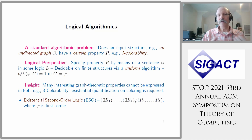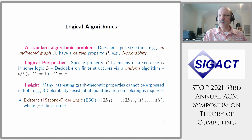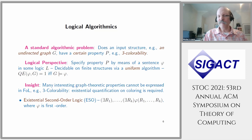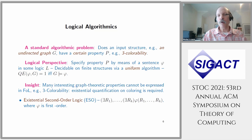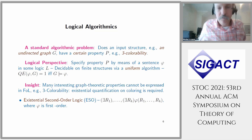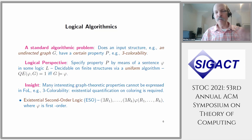First-order logic may be too weak for some problems. For example, three-colorability is not expressible in first-order logic, because we need to say 'there exists a coloring' — quantifying over a relation, which is existential second-order logic. In the case of three-coloring, we quantify over unary relations representing the colors. So logical algorithmics is the study of algorithms where the problems are specified using logic.